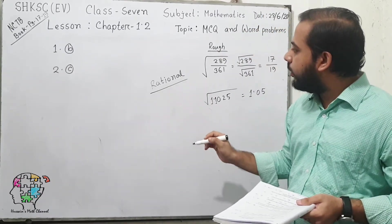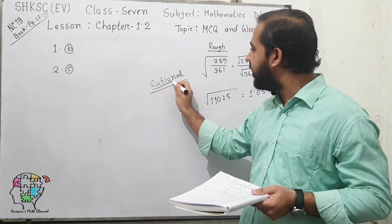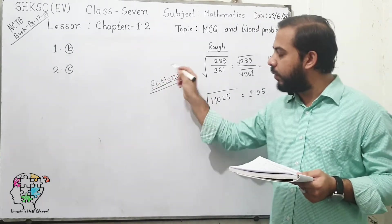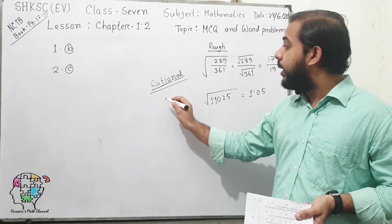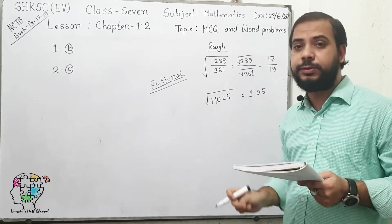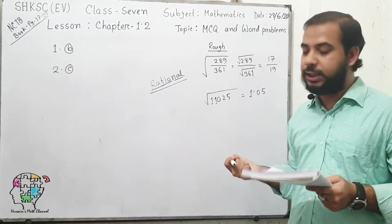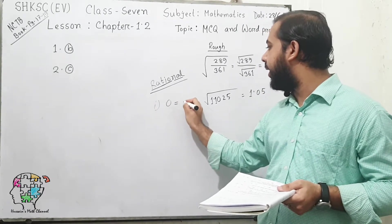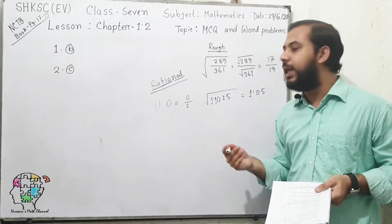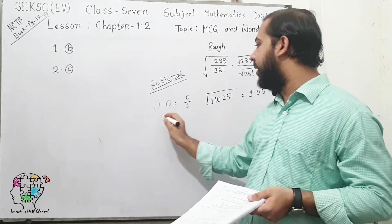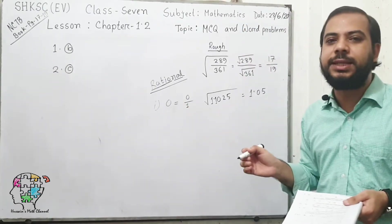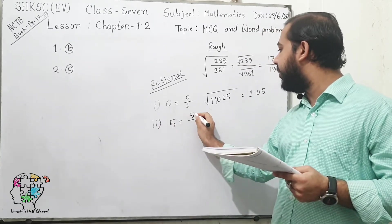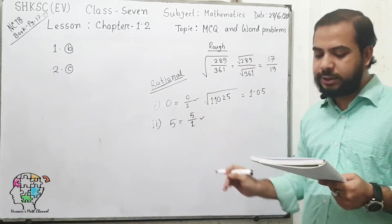From the word 'rational,' you can separate 'ratio' and 'nal.' A rational number is a number which can be written as the ratio, i.e., in some fraction. Option 1 is 0, which we can write as 0 divided by 1. Option 2 is 5, which can be written as 5 divided by 1. So these two are rational numbers.